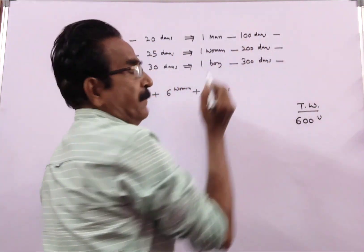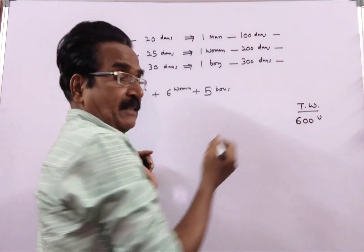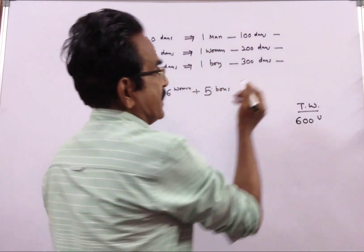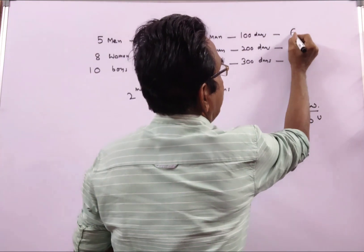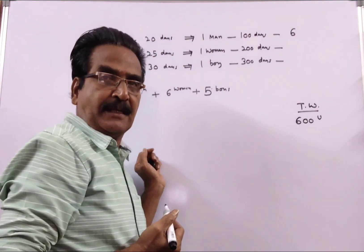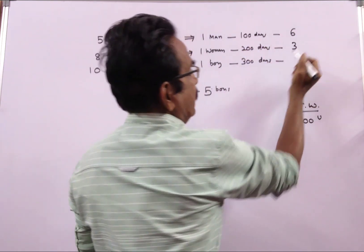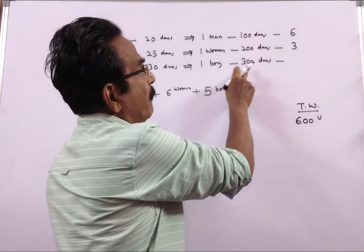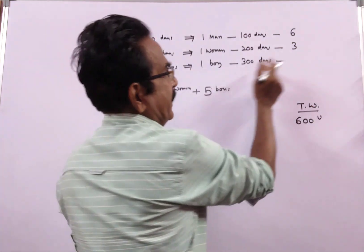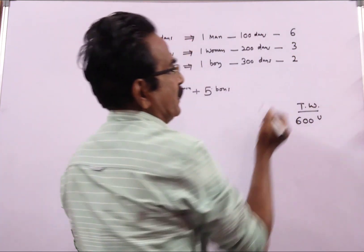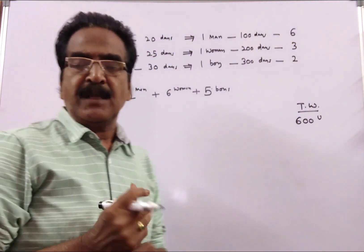So, man completes the total work, 600 units in 100 days. That means man can complete 6 units of work per day. Woman, 600 by 200. Woman can complete 3 units of work per day. Boy, 600 by 300. Boy can complete 2 units of work per day.